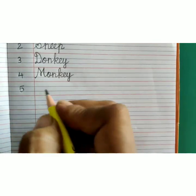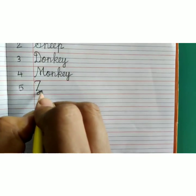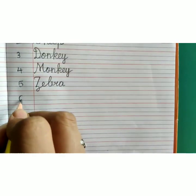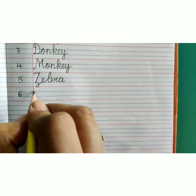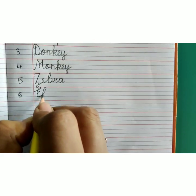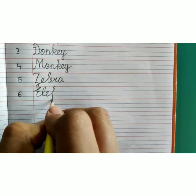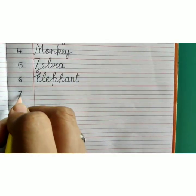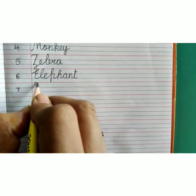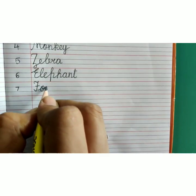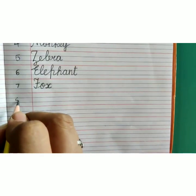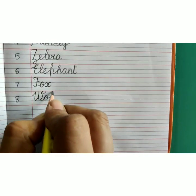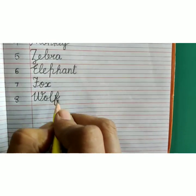Number 5, Z-E-B-R-A, zebra. Number 6, E-L-E-P-H-A-N-T, elephant. Number 7, F-O-X, fox. Number 8, W-O-L-F, wolf.